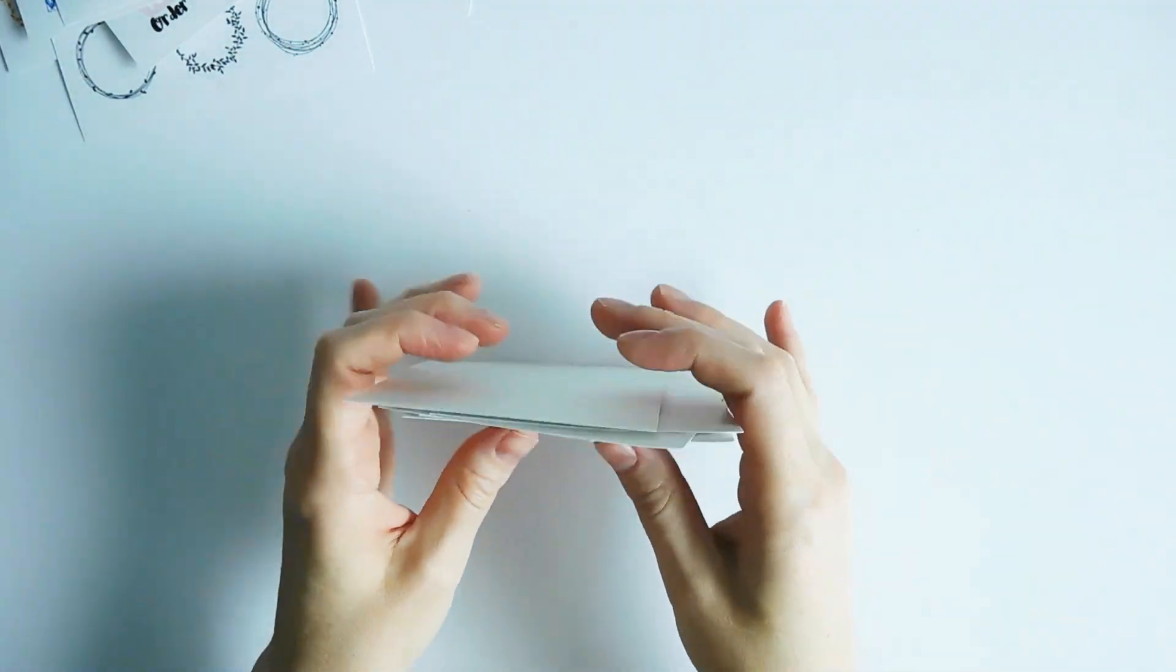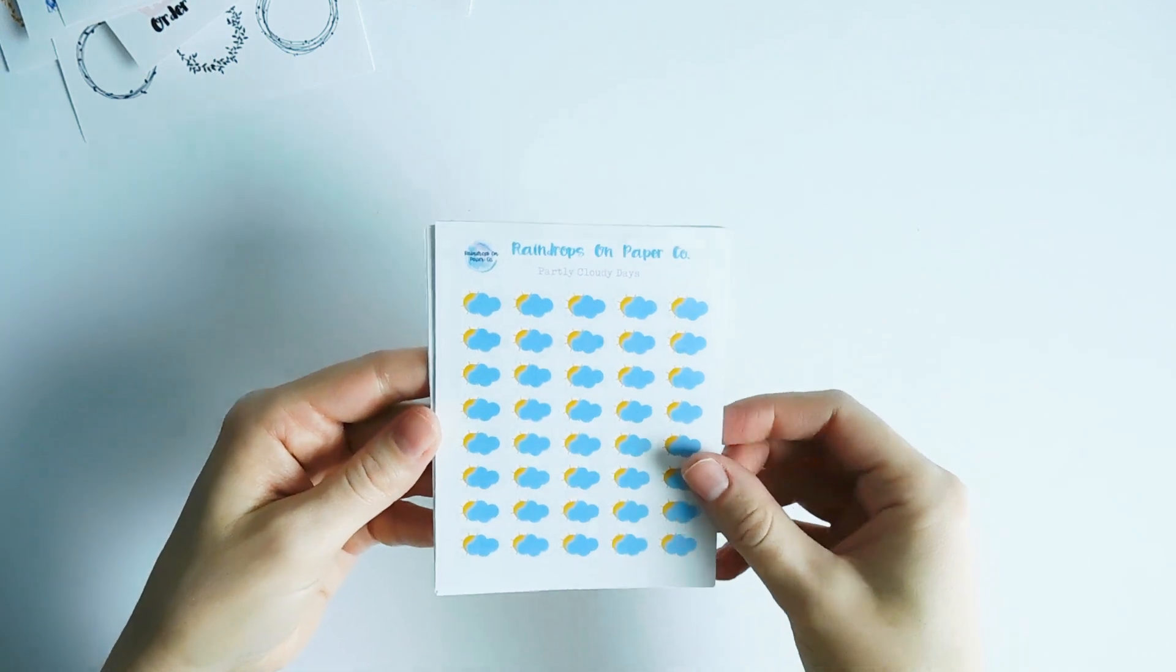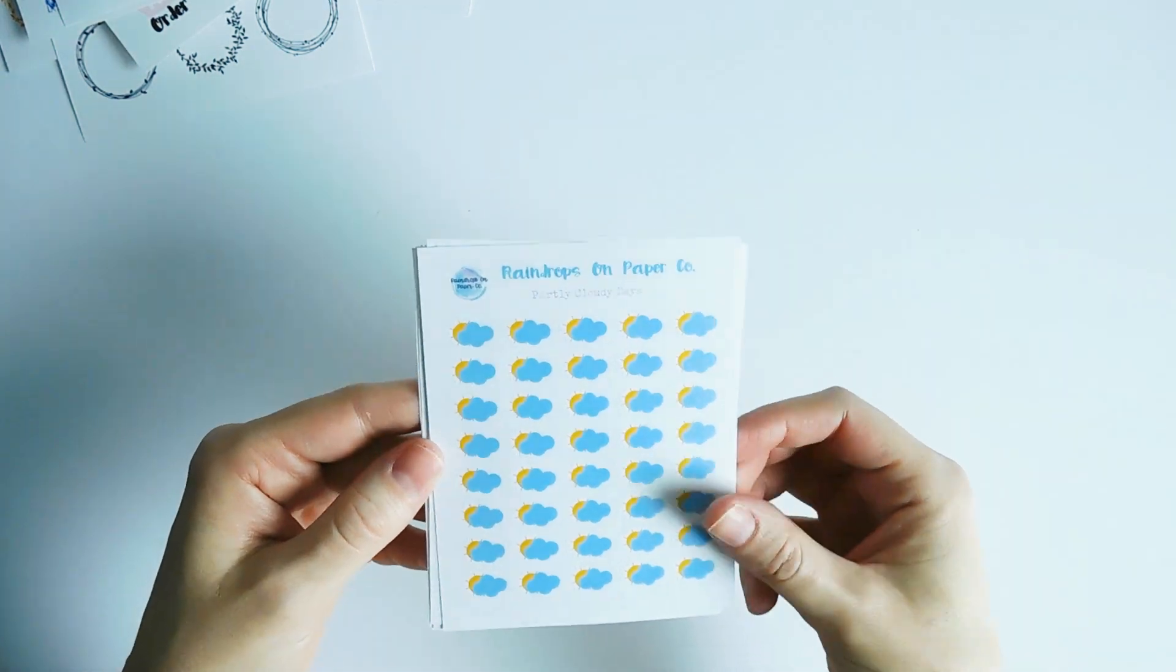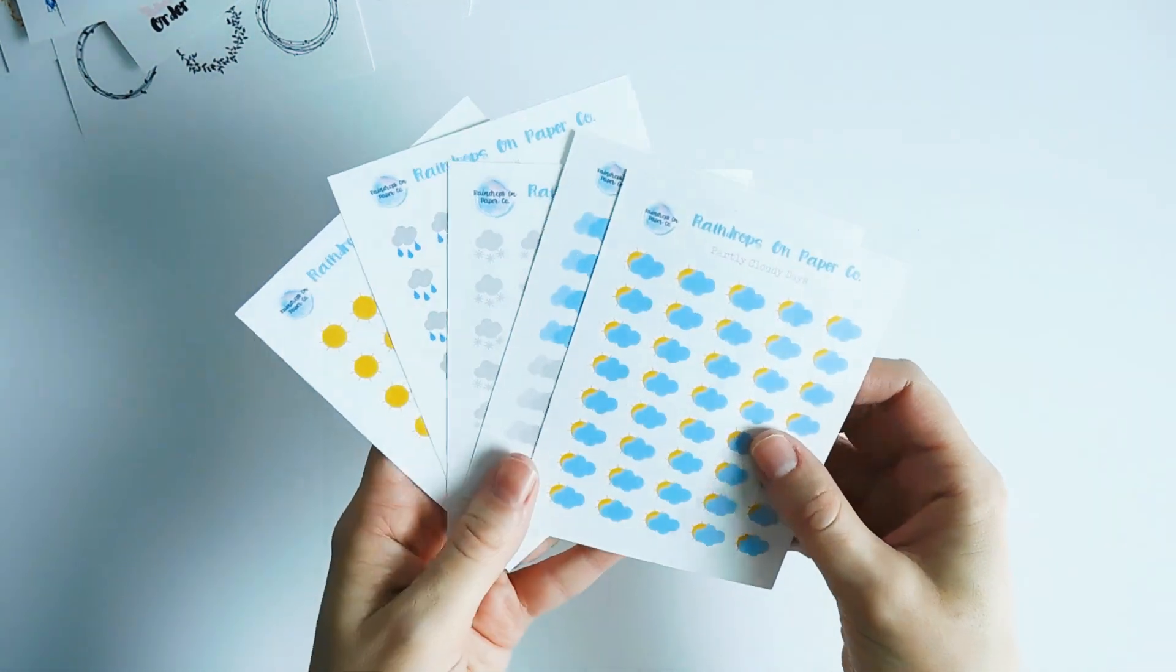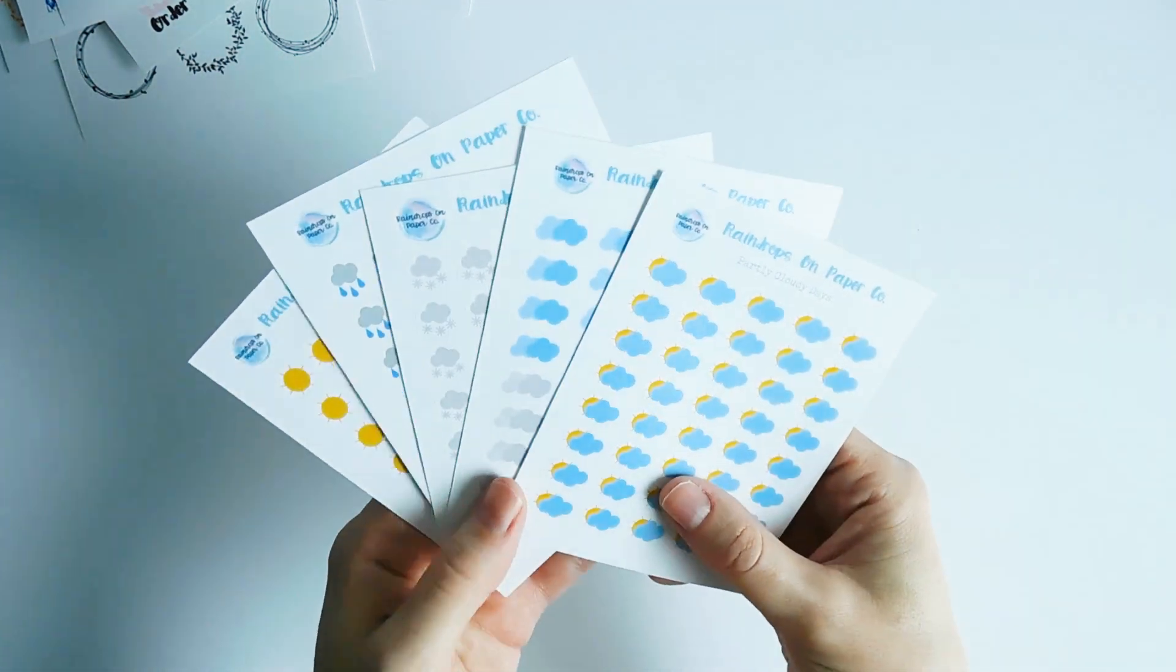Next I offer a variety of weather sheets. So let's go through these smaller sheets first. Here are the partly cloudy days. I created all of these images from scratch. I don't have a drawing app or anything. I just put shapes together and create my stickers. So here's the partly cloudy days sheet. You've got a sun peeking through behind some clouds.